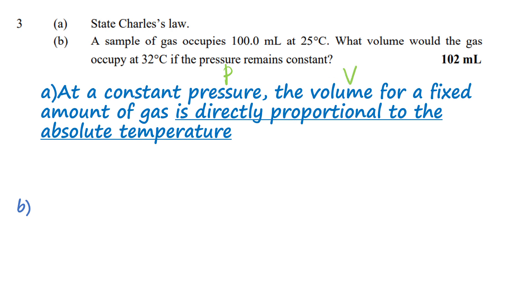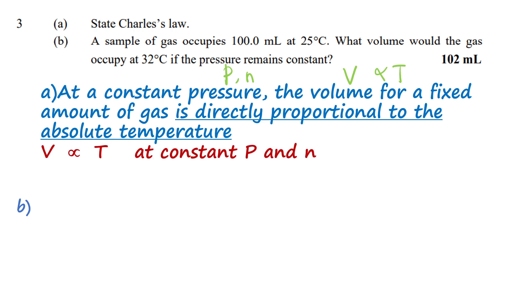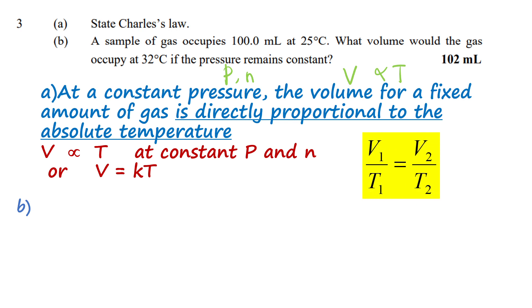At constant pressure, volume is directly proportional to temperature. This gives V = kT, which rearranges to V₁/T₁ = V₂/T₂. This is Charles's Law.